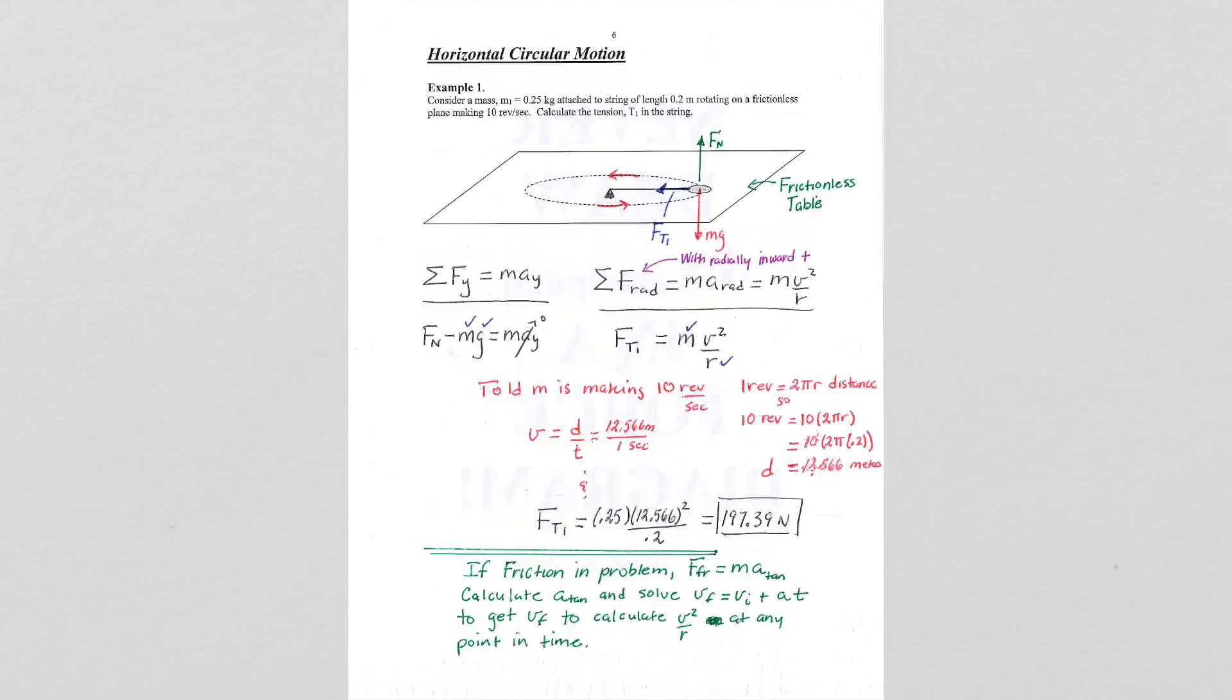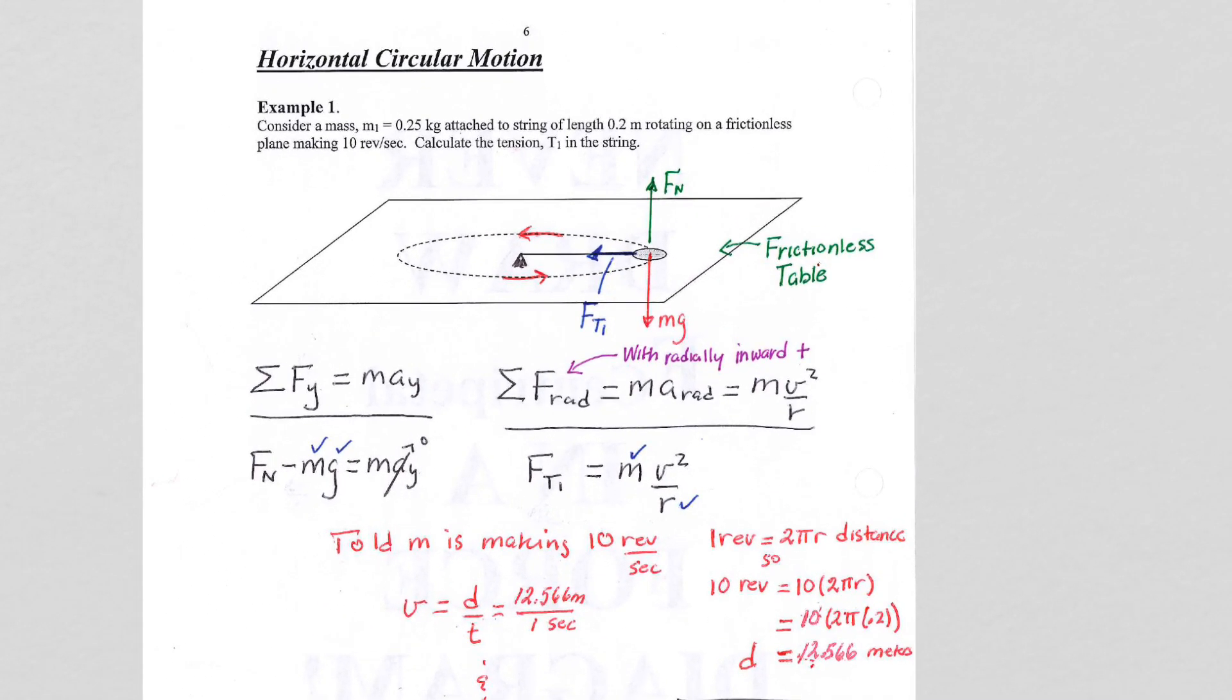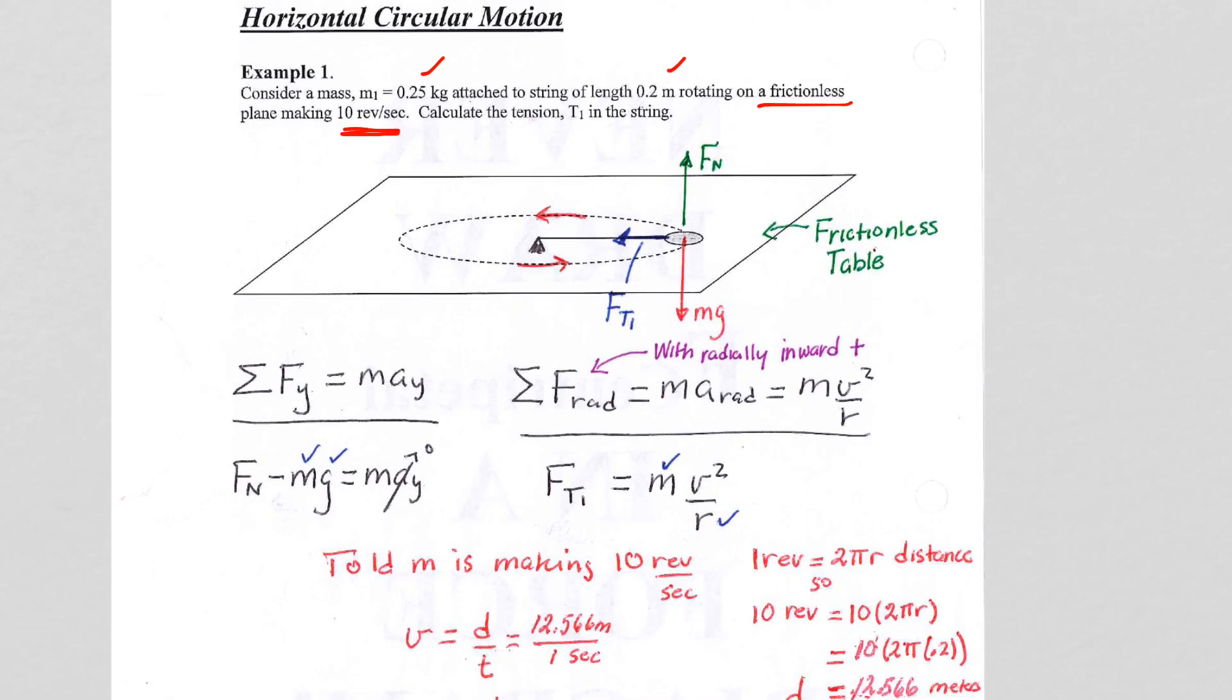So let's take a look at a specific example. Here we have horizontal circular motion, and we are told to consider a mass of 0.25 kilograms attached to a string of 0.2 meters in length rotating on a frictionless surface, and it is making 10 revolutions per second. If you are not told that that number is changing, you are to assume it is a constant 10 revolutions per second, so that means it is moving at constant speed. So here we are asked to calculate the tension T1 in the string. Notice that I do not put a generic force. It is the force from the tension T1. I do not label it force radial. I do not call it force centripetal.